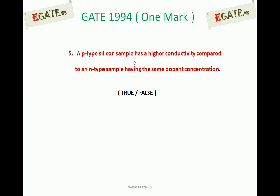That is nothing but acceptor concentration and donor concentration are going to be same at that time. P-type is going to be having higher conductivity than n-type. The correct option for this one is false.